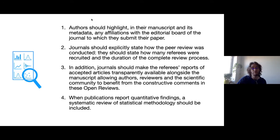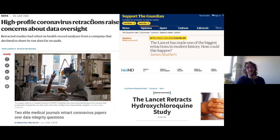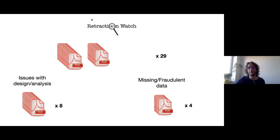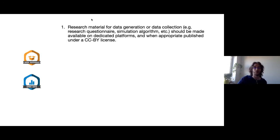Looking again at the Surgisphere scandal — the Lancet retraction and the NEJM retraction — it all happened because the data was not available. We found four papers that were retracted because of missing or fraudulent data. The solution to this is pretty obvious: open materials and open data. Our guidelines state that all research materials for data generation or collection should be made publicly available on available platforms.